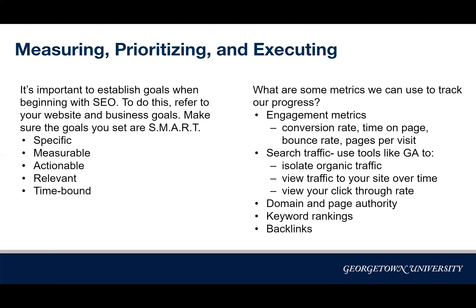Our goals have to be measurable, so what kind of things can we use to measure SEO? One thing you can track is engagement metrics — things like conversion rates, time spent on a page, your bounce rate, and pages per visit. You can also track your search traffic. Through tools like Google Analytics you can isolate your organic traffic, view traffic over a period of time to see how your SEO has helped, and view your click-through rate. You should also pay attention to your domain and page authority, keyword rankings, and the number of backlinks on your site.